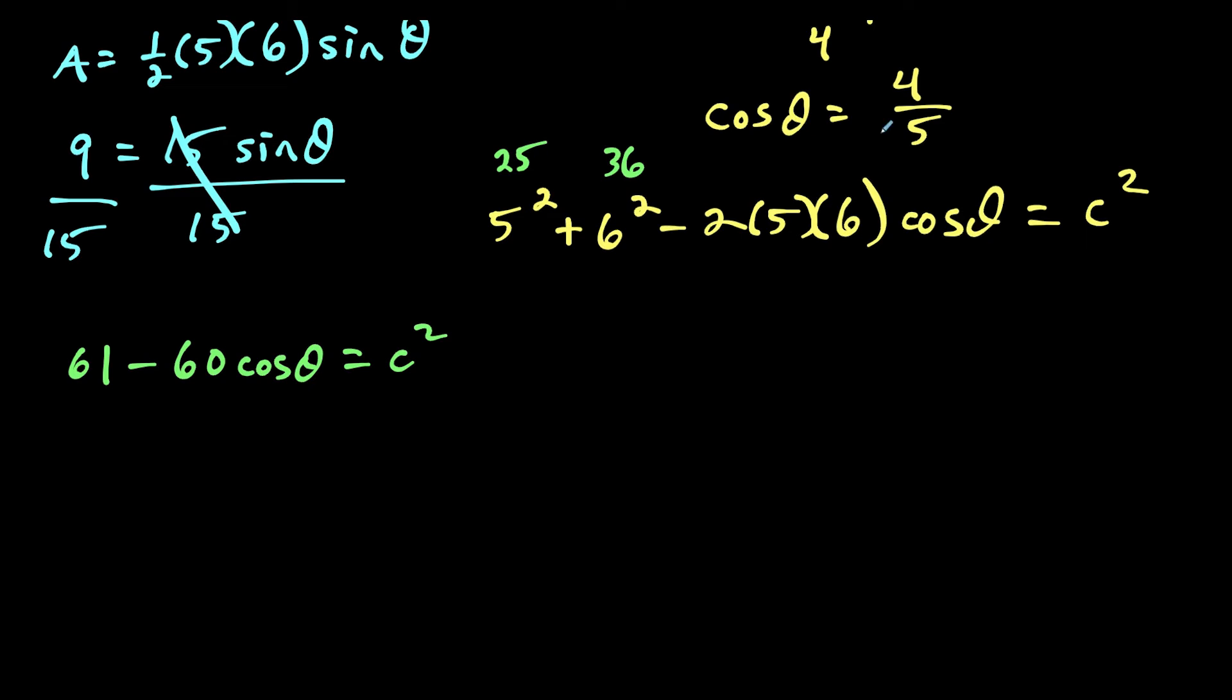And now we just make a substitution. Cosine theta is equal to four fifths. So we have 61 minus 60 times four fifths is equal to c squared. And now we just got to simplify this. 60 over five is 12. So this is going to give us 61 minus 48 after we do 12 times four equals c squared.